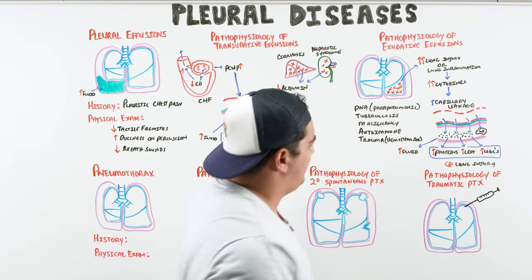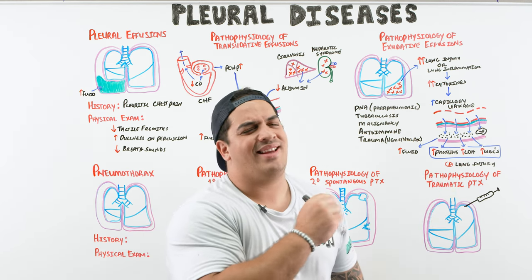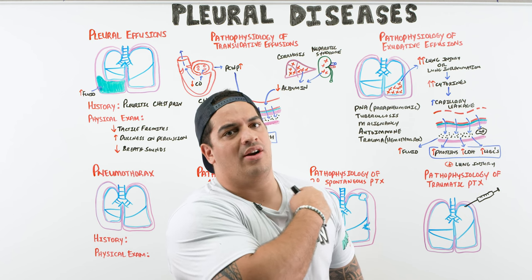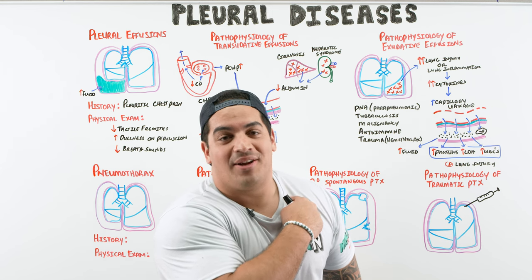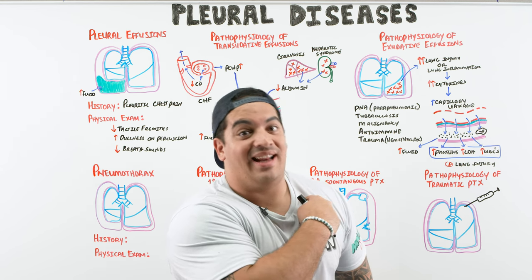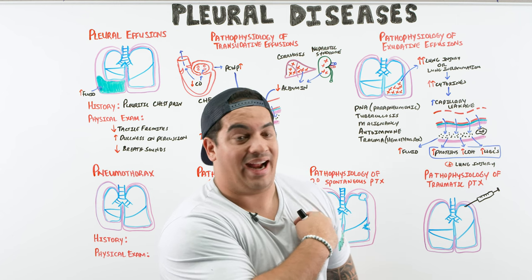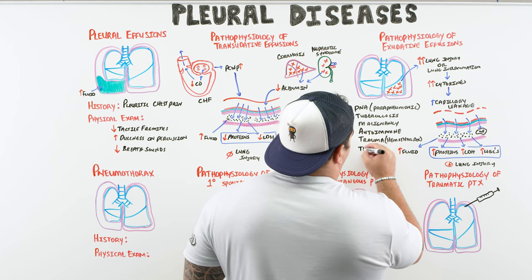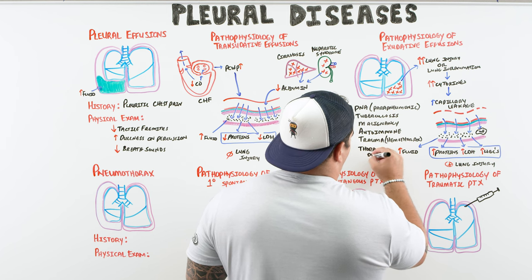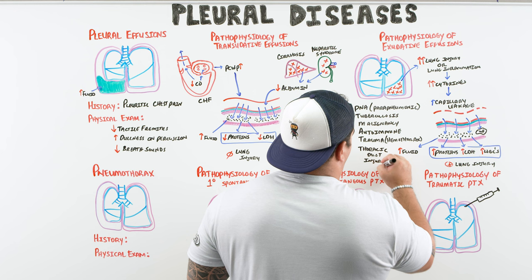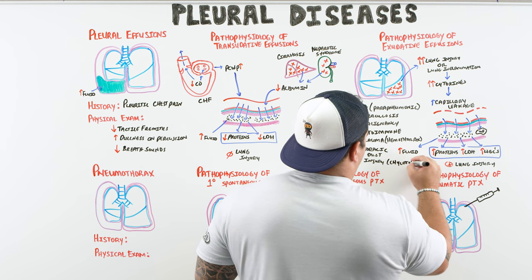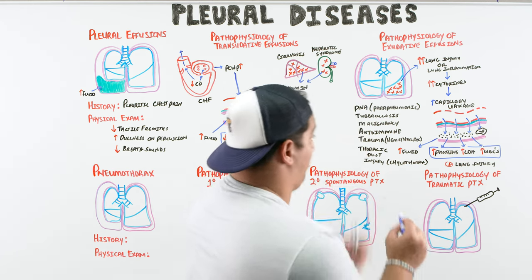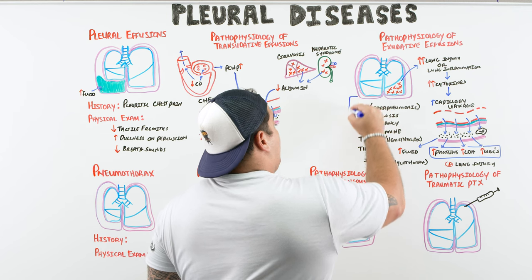There are also other causes. The thoracic duct runs through the chest, and if it is injured, lymphatic fluid accumulates in the pleural space — called a chylothorax. A chylothorax is rich in chylomicrons, which are rich in triglycerides. These are the major reasons a patient develops exudative pleural effusions due to lung injury or inflammation causing capillary leakage.